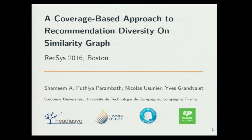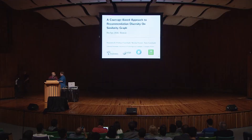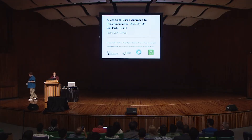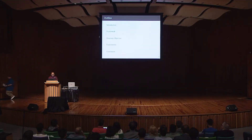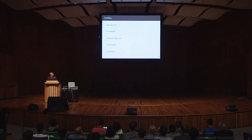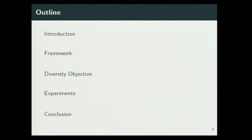Hi, welcome to my presentation. I'm Shamim, and this is John. We work with Nicolas Sushnir and Eve Gamale. This is the outline of my presentation. I'll first explain the problem and our contributions, then the mathematical framework and the diversity objective function we propose, and before concluding, I'll take you through the experimental results.